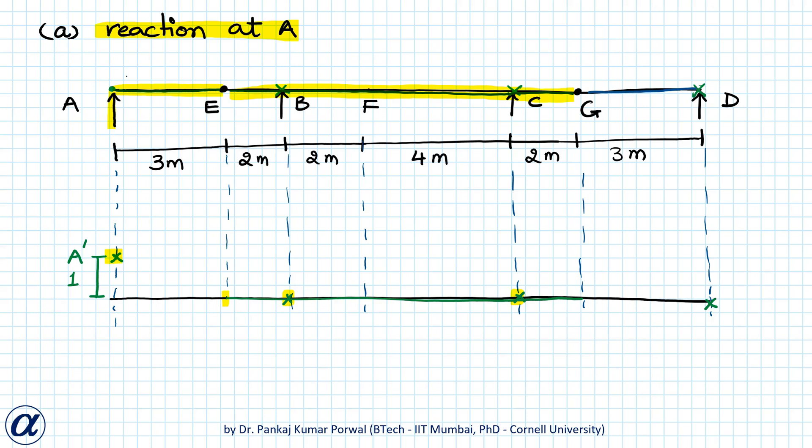For segment GD, G has zero vertical displacement and D also has zero vertical displacement, so GD will also remain horizontal without any displacement. This green line becomes the influence line diagram for vertical support reaction at A.